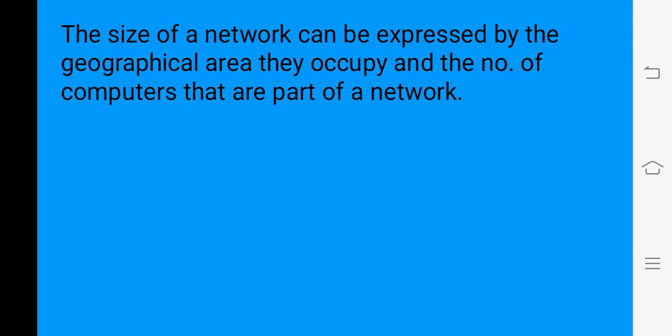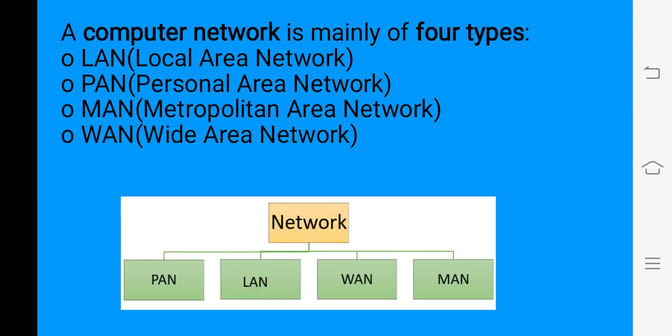The size of a network depends on the geographical area and also how many computers are part of the network. A computer network may be divided into 4 types: local area network, personal area network, metropolitan area network, and wide area network.